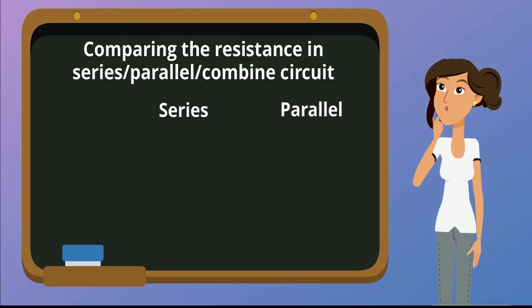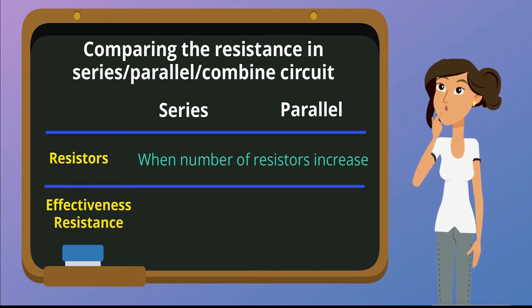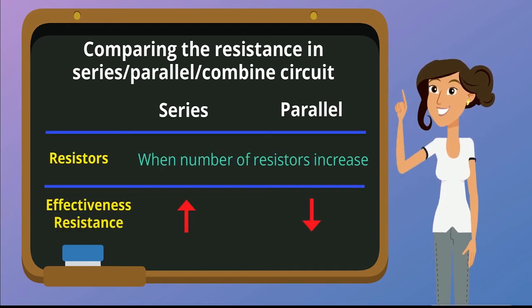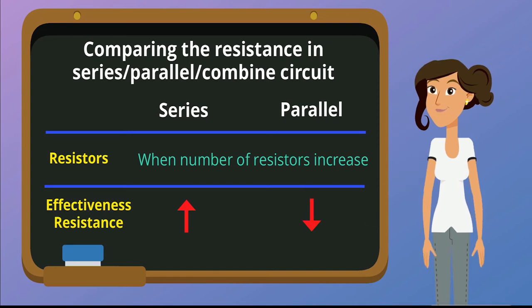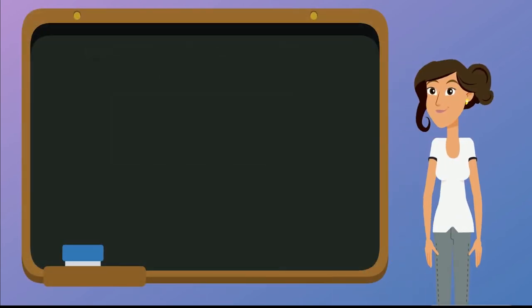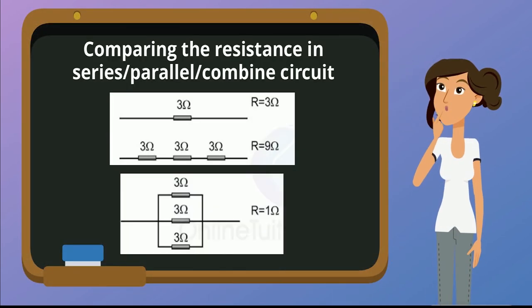In a series circuit, the more resistors with equal resistance in the circuit, the higher the effective resistance of the circuit. In a parallel circuit, the more resistors with equal resistance in the circuit, the lower the effective resistance of the circuit. To have a better understanding, here are some examples.